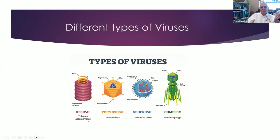Here are a few of the shapes viruses can come in, but they all have this basic genome in the middle — the RNA or DNA that does the work — then the capsid outside, and sometimes an envelope protein on the outside as well. Adenovirus is a common cold virus; the influenza virus is more spherical. There are all kinds of different shapes and sizes.